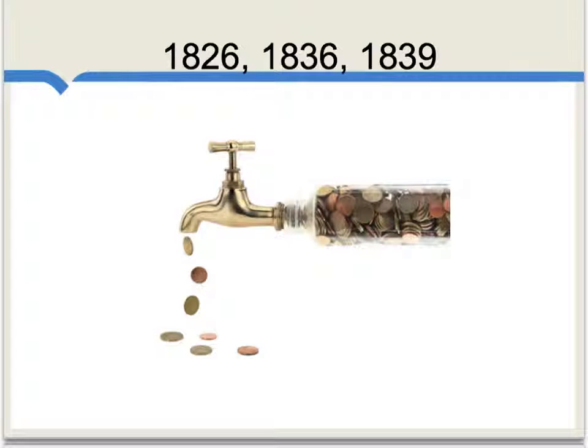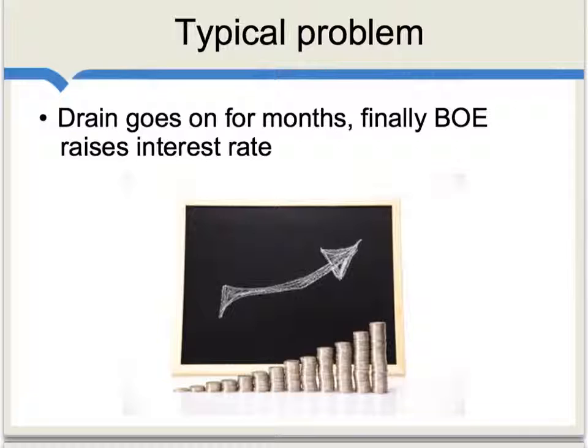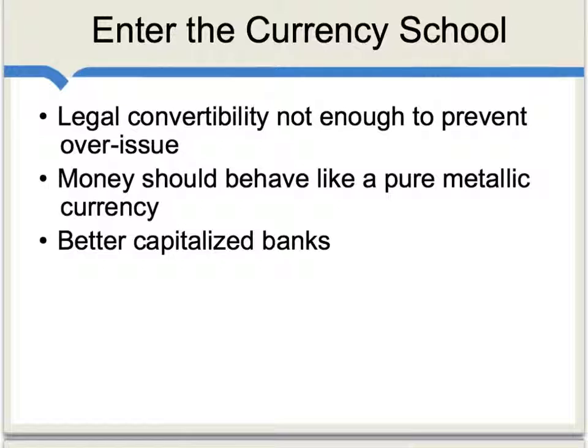Over no more than a 23-year period, this problem of gold drains arose three separate times. The typical problem was that a gold drain would go on for months, the Bank of England would be in danger of losing too much gold, and finally the bank would raise interest rates to bring deposits back — but that would have a contractionary effect on the economy. To the extent you have an ongoing drain of gold under a gold standard, the central bank either has to raise interest rates or break the link to gold and return to a paper currency.